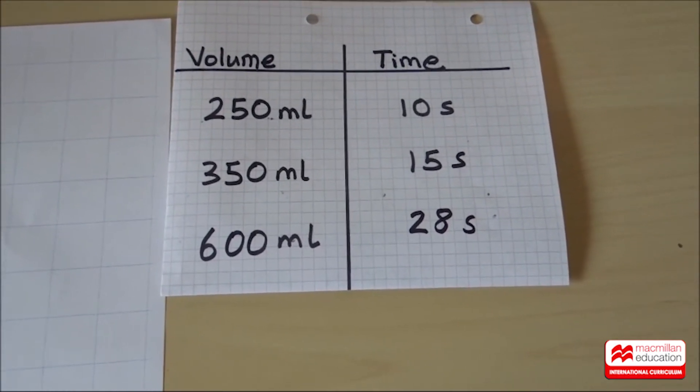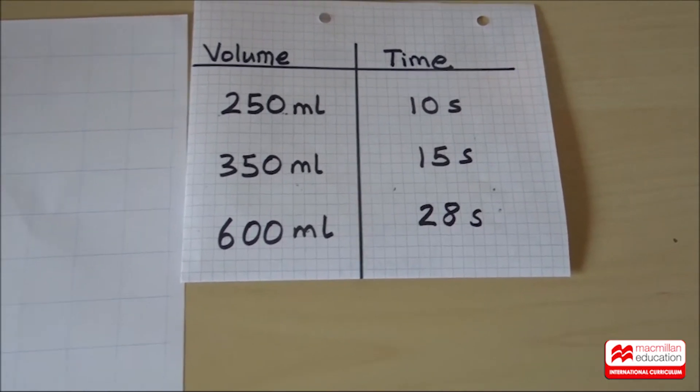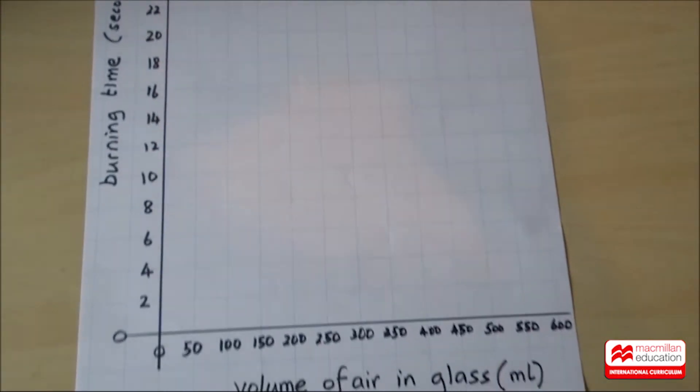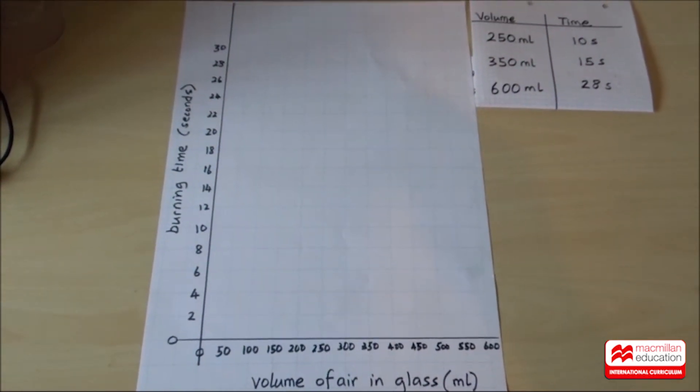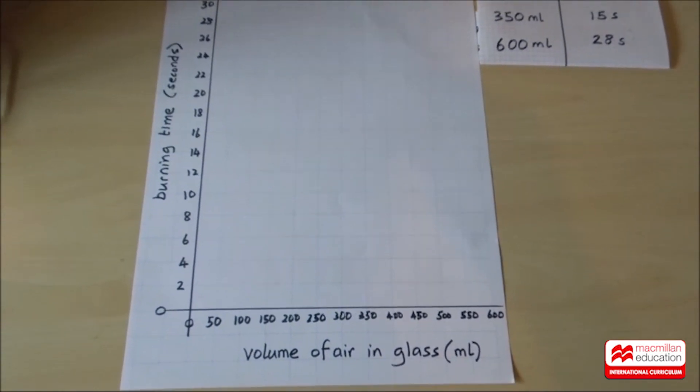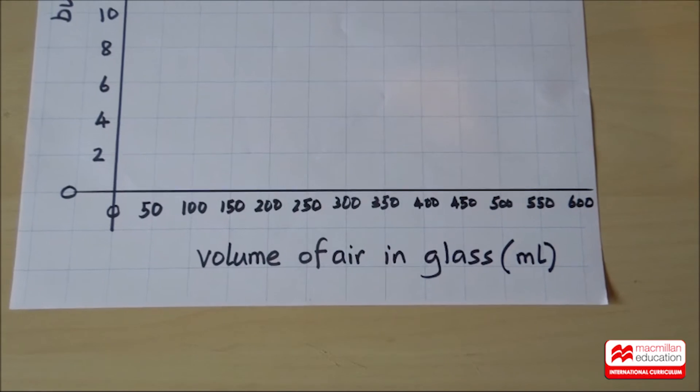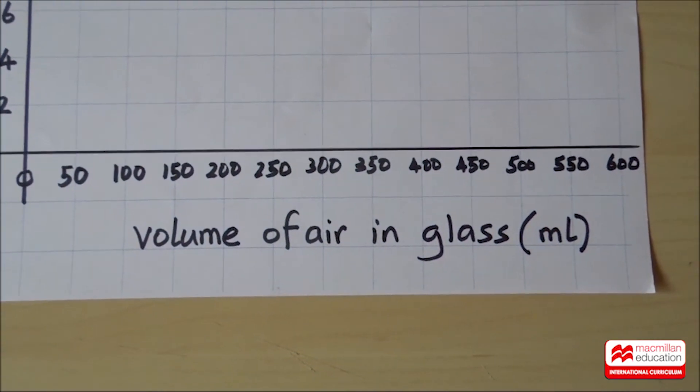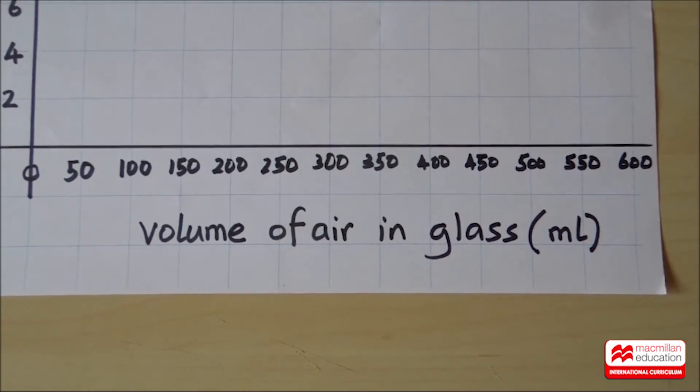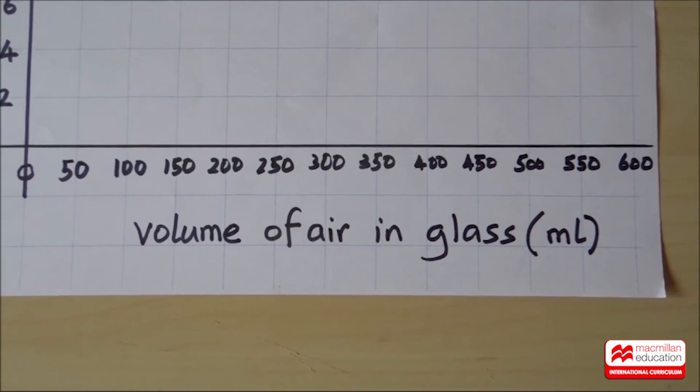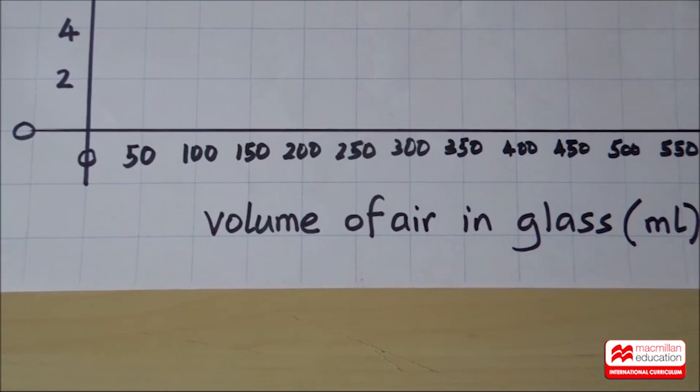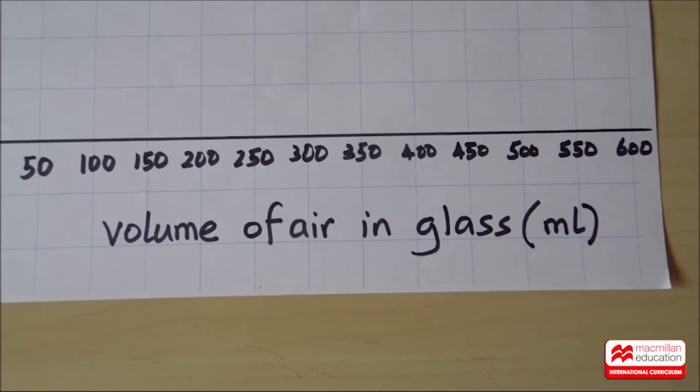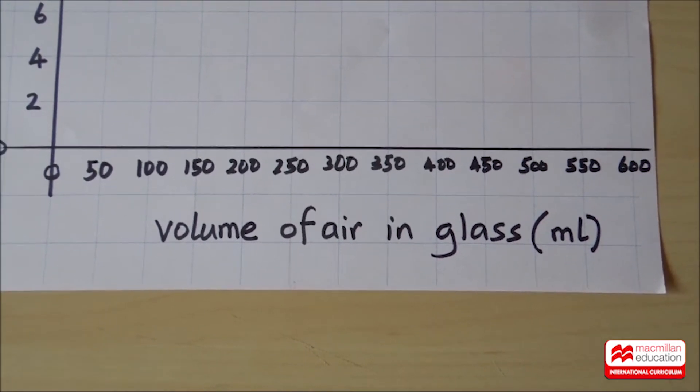So let's start with our table of results. There it is. And what I've produced next to it is a chart where we can turn our results into an easy pattern to see. Let's have a look at the chart. I've got the volume of the air in the glass in milliliters along this horizontal line. Notice that the biggest volume was 600 mils. Therefore, my line has to have numbers equally spaced up to 600. I had to plan where to start my graph.